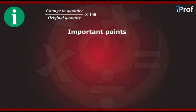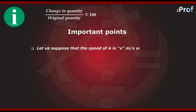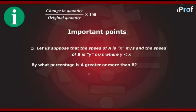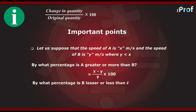Now let us look at some important points to remember about percent change. Suppose the speed of A is x meters per second and the speed of B is y meters per second, where y is less than x. Then the percentage by which A is greater than B is equal to x minus y, whole divided by y, into 100. The percentage by which B is less than A is equal to x minus y divided by x into 100.